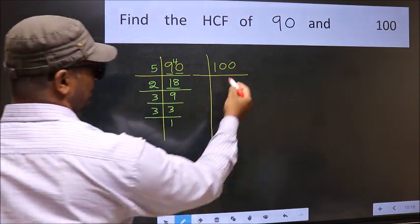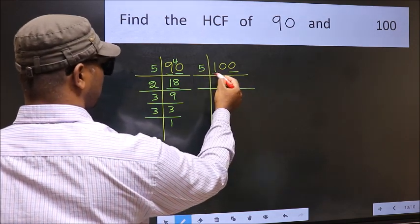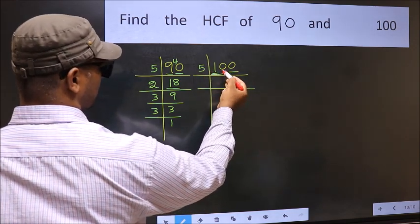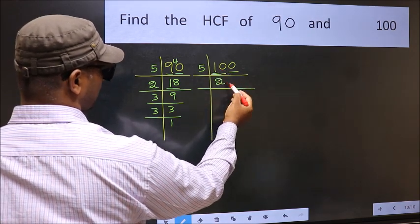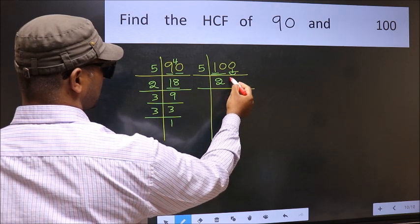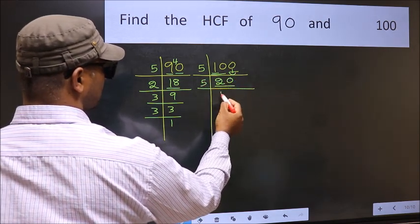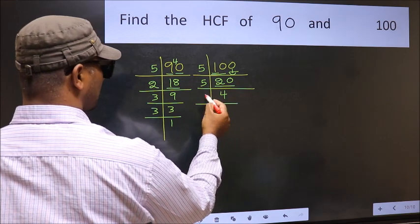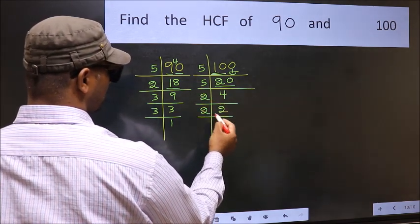Now the other number. Last digit 0 so take 5. First number 1 smaller than 5 so 2 numbers 10. When do we get 10 in 5 table? 5, 2 is 10. Now this 0 as it is down. Now 20 is 5, 4 is 20. 4 is 2, 2 is 4. 2 is a prime number so 2, 1 is 2.